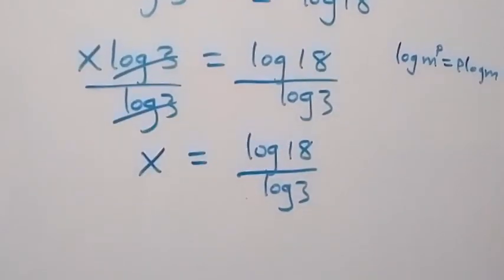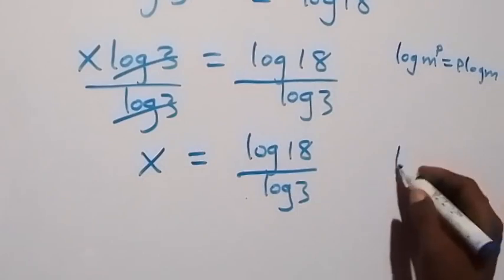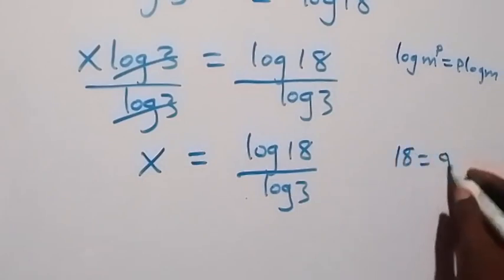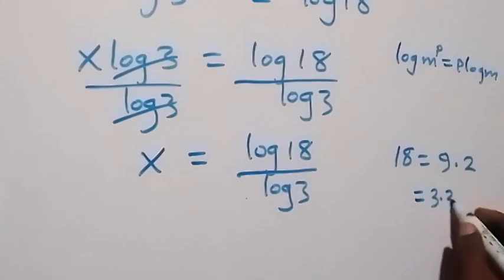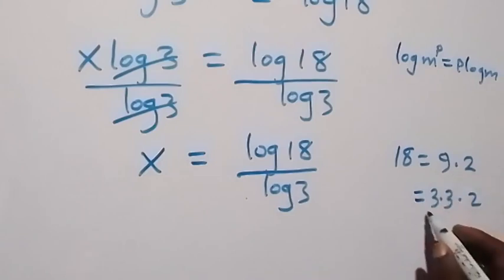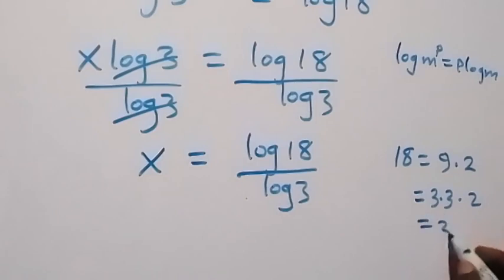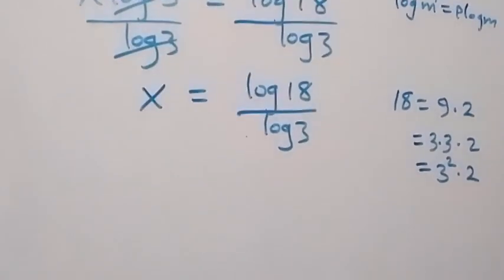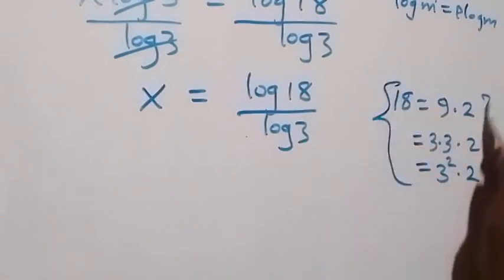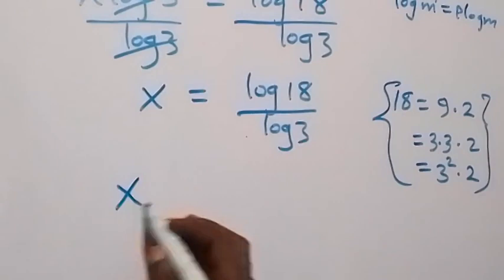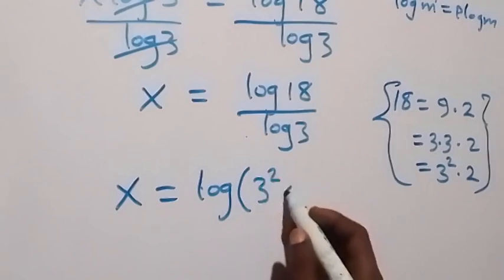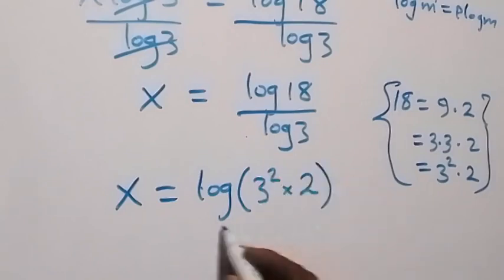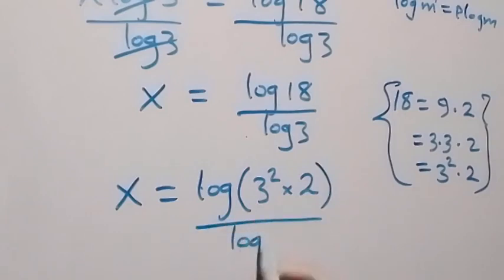Then we can simplify this further and write 18 as equals to 9 times 2. And also, 9 can be written as 3 times 3, then times 2. So we can write 18 as 3 squared times 2. Then what we have now gives us x equals to log of (3 squared times 2), all over log 3.